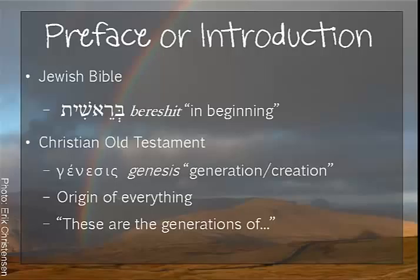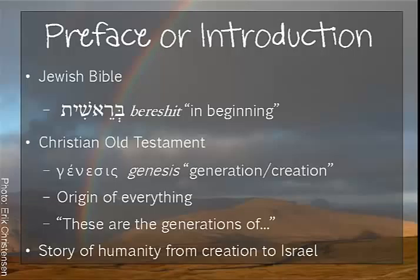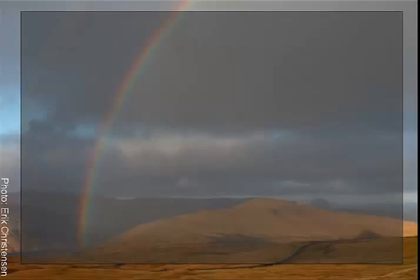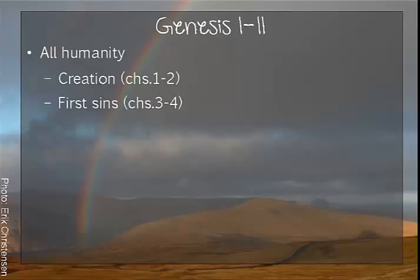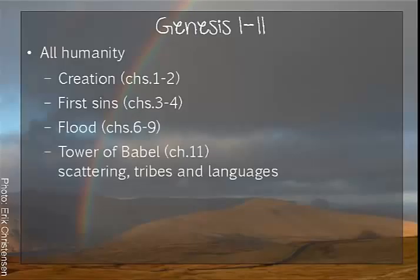It contains the story of humanity from creation to the emergence of Israel as a people, first in Canaan and in Egypt. Chapters 1 to 11 tell of events that involve all humanity — in particular the creation of the world and of humans, the first sins in chapters 3 and 4, the flood, the tower of Babel, and the scattering of humans into tribal and language groups.